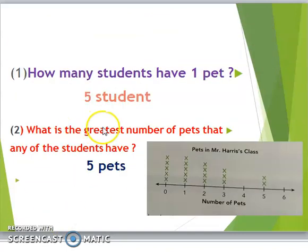Question number 2. What is the greatest number of pets that any of the students have? Look here. 0, 1, 2, 3, 4, 5, 6 are the number of pets. The greatest number here is 6, but no students here. So, the greatest number of pets that any of the students have is 5 pets.